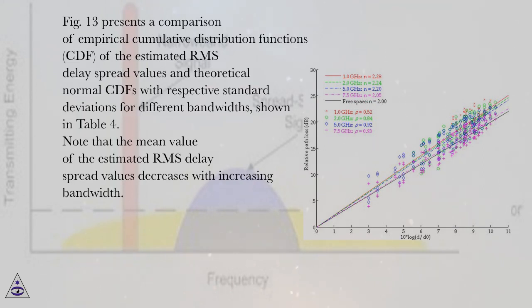Figure 13 presents a comparison of empirical cumulative distribution functions, CDF, of the estimated RMS delay spread values and theoretical normal CDFs with respective standard deviations for different bandwidths, shown in Table 4.